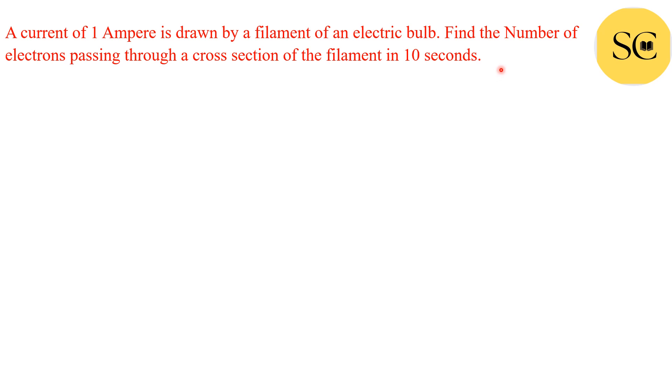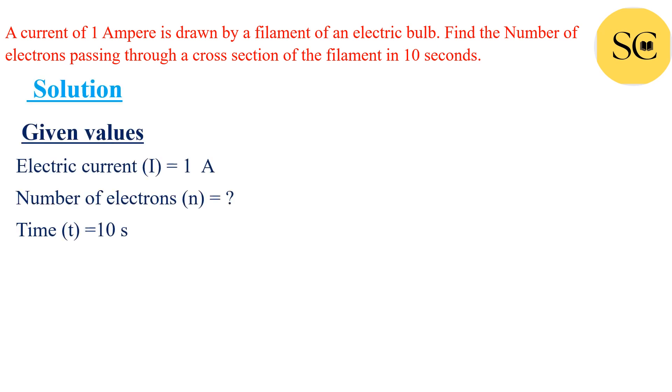So now let's solve the question. First of all, we will write the given values. We have electric current I = 1 ampere and time t = 10 seconds.